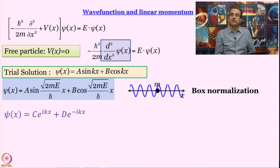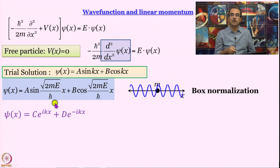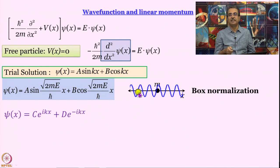We can actually write the wave function in a different manner. Instead of sine and cosine functions, we can write psi(x) = c e^(ikx) + d e^(−ikx). I leave it to you to differentiate it twice and convince yourself that this function also satisfies the Schrödinger equation for a free particle. We know that e^(ikx) = cos(kx) + i sin(kx) and e^(−ikx) = cos(kx) − i sin(kx), so multiplying by c and d respectively and adding gives a sum of sine and cosine functions.